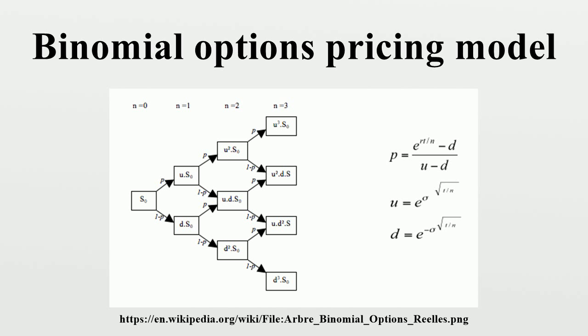Price tree generation, calculation of option value at each final node, sequential calculation of the option value at each preceding node. Step 1: Create the binomial price tree. The tree of prices is produced by working forward from valuation date to expiration. At each step, it is assumed that the underlying instrument will move up or down by a specific factor per step of the tree. So, if S is the current price, then in the next period the price will either be S·u or S·d. The up and down factors are calculated using the underlying volatility sigma and the time duration of a step, measured in years. From the condition that the variance of the log of the prices, we have u = e^(sigma√Δt) and d = e^(-sigma√Δt).